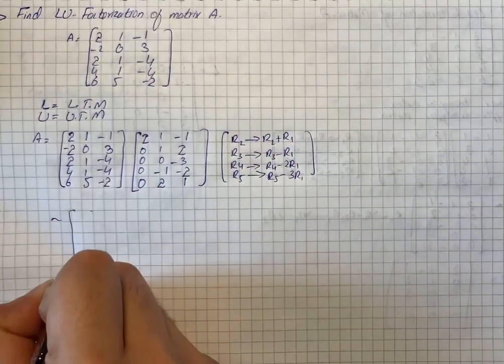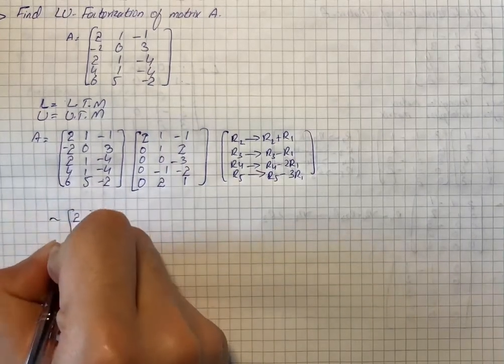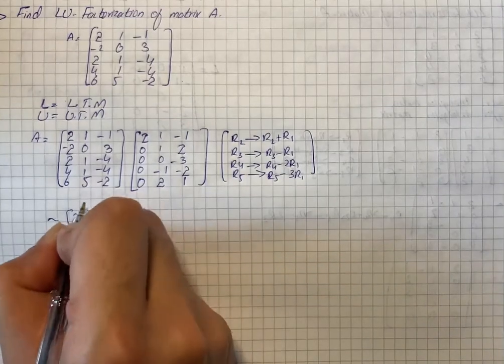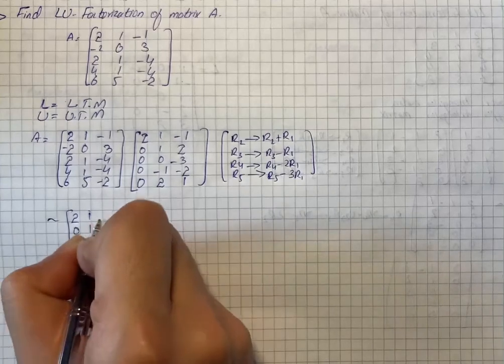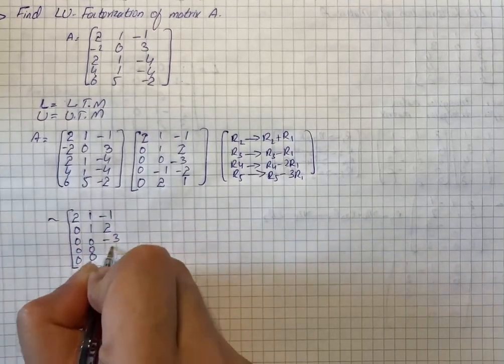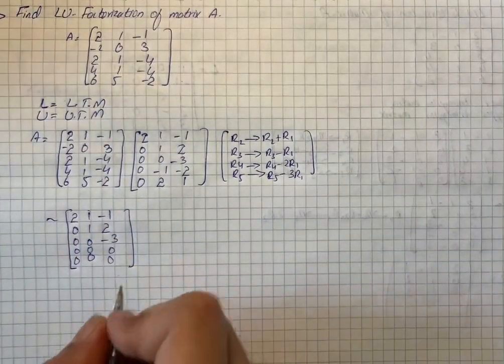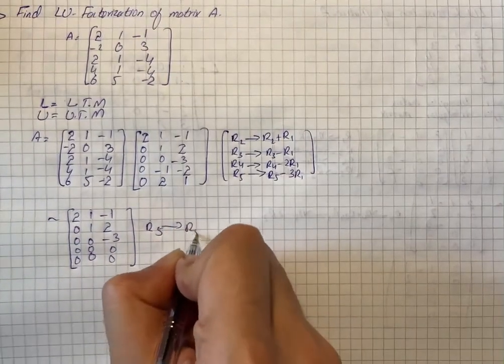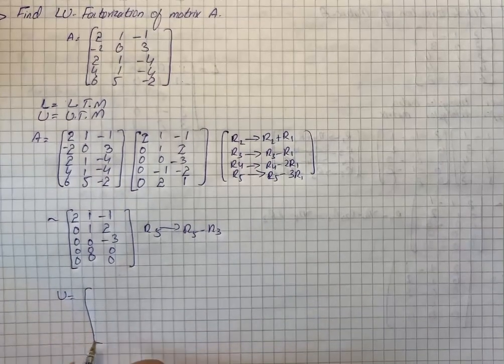On simplification it will give us 2, 0, 0, 0, 0; 1, 1, 0, 0, 0; minus 1, 2, minus 3, 0, 0. From here we have R5 operation R5 minus R3, so we have U matrix that is equal to